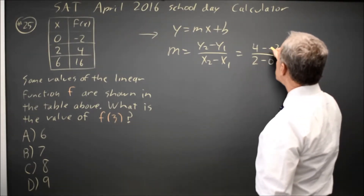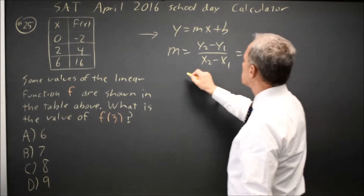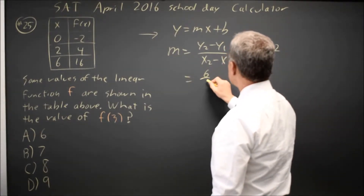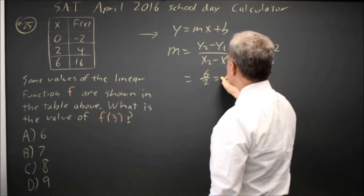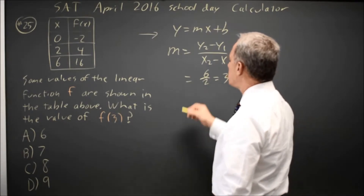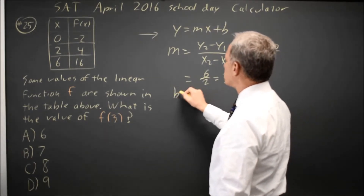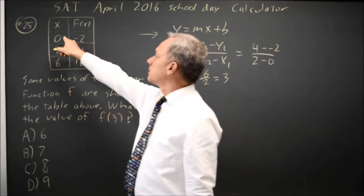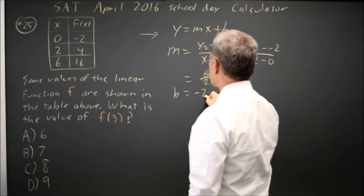So 4 minus negative 2 is 6, and 2 minus 0 is 2, so the slope is 3. The y-intercept is the y value when x is 0, and that's given as negative 2.